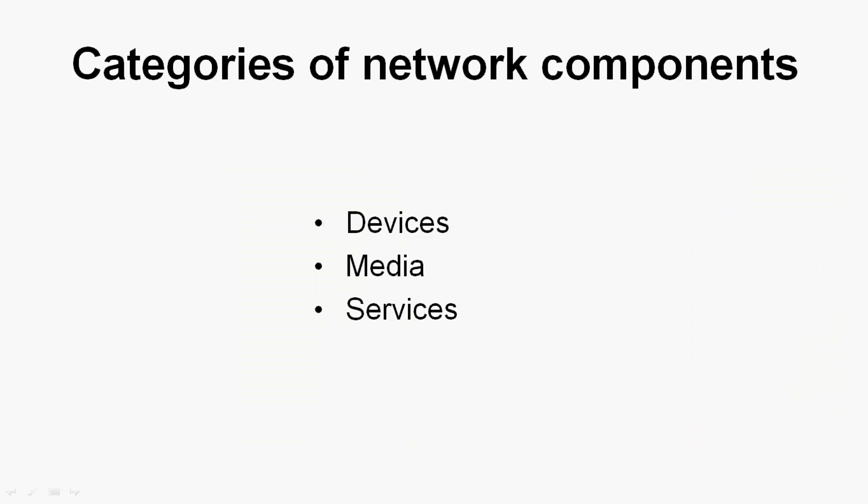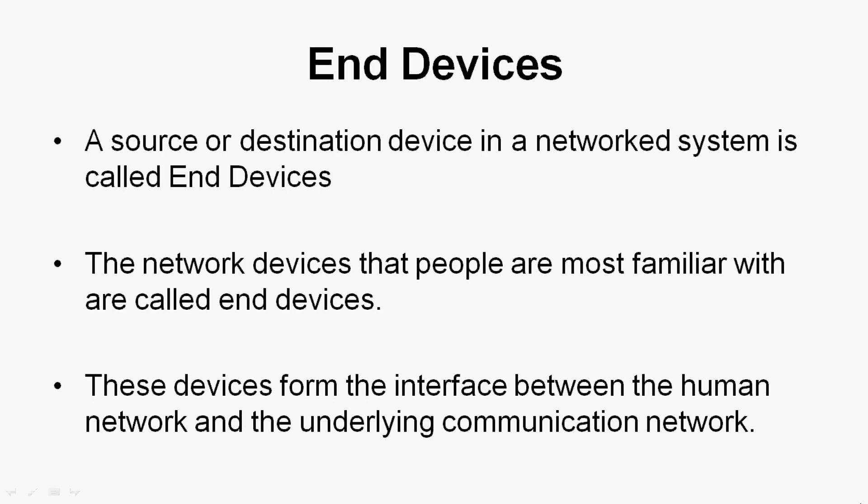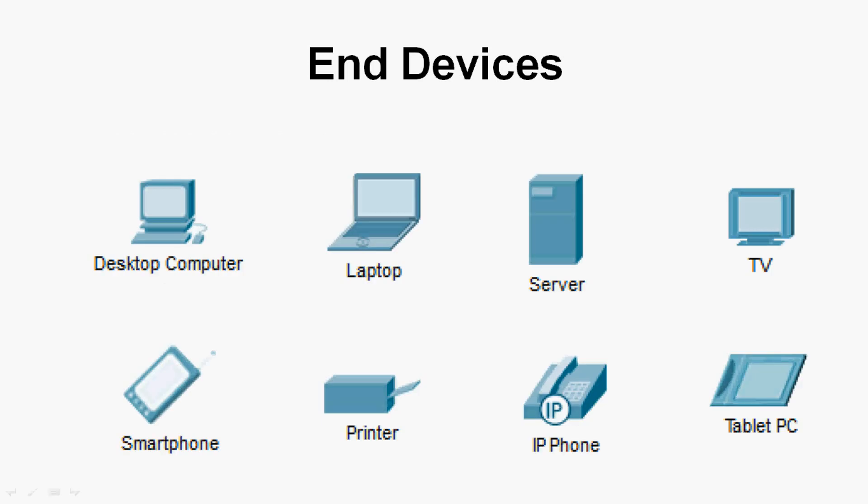We will discuss each category. First, coming to the first category: devices. Devices are of two types — end devices and intermediary devices. A source or destination device in a networked system is called an end device. These devices form the interface between the human network and the underlying communication network.